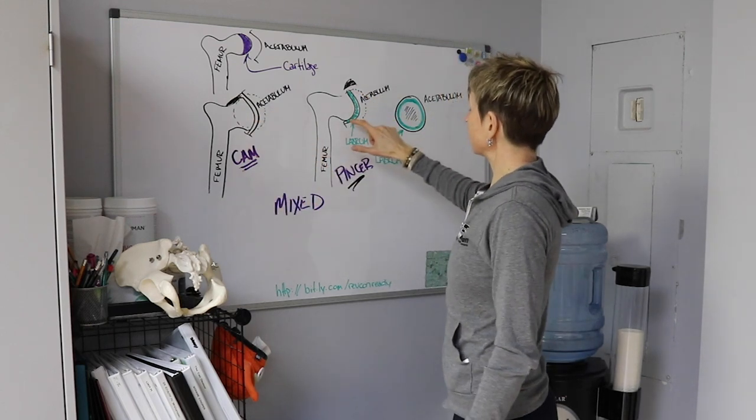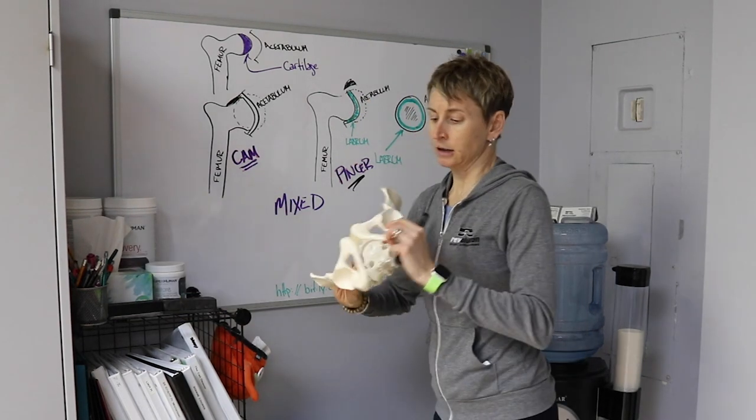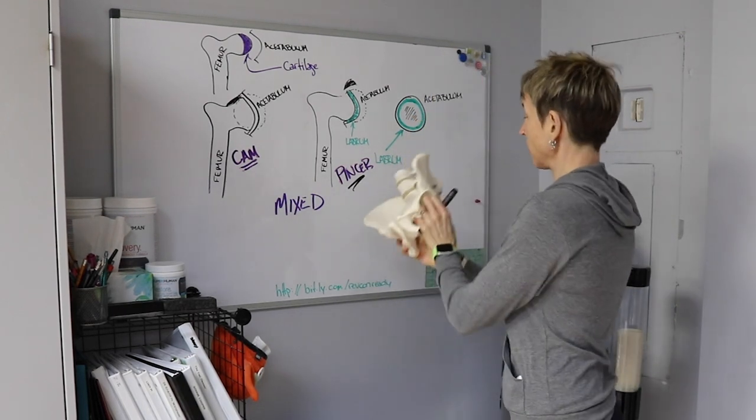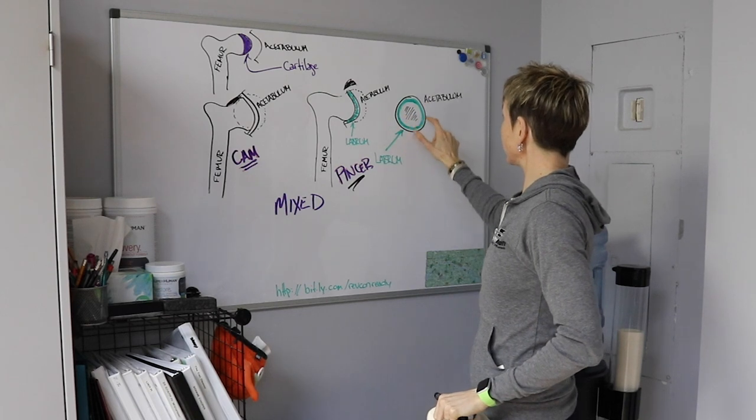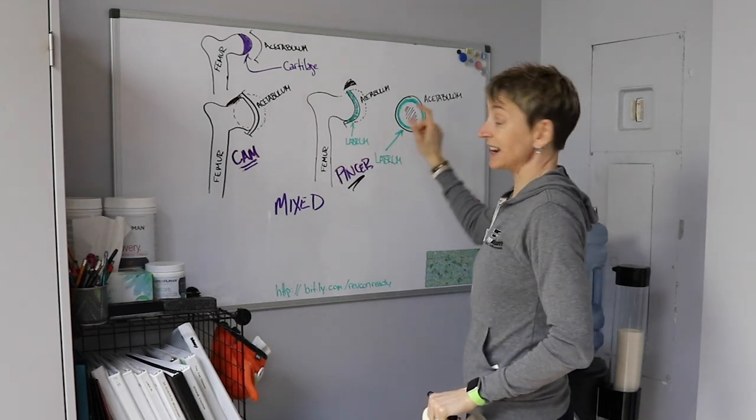Well, the labrum is sort of almost like a cartilaginous ring. So if I'm looking at the socket like that, that's what I tried to draw up here. So we're looking right at the socket and there's this ring of like cartilage type material. And that is the labrum.